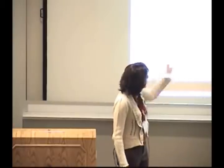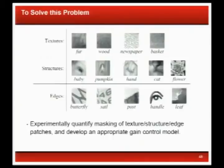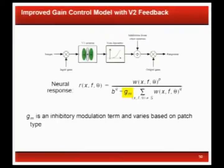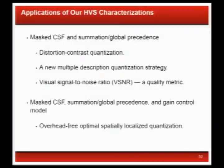We did masking experiments for all three patch types and came up with a way to extend the gain control model by inserting an inhibitory modulation term — a GM term with a constant out front. We call it an inhibitory modulation term. When we put a constant out front, we were actually able to get the fits to match. That was the only mathematically structural way we could get some fits going there.